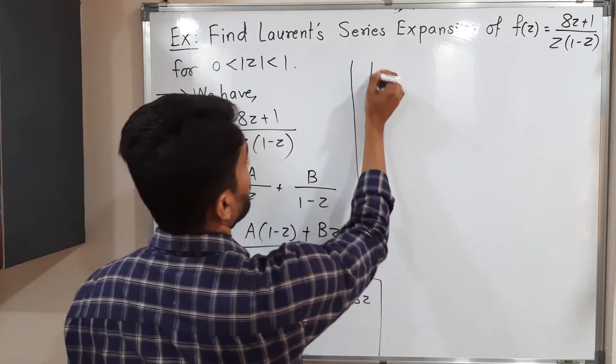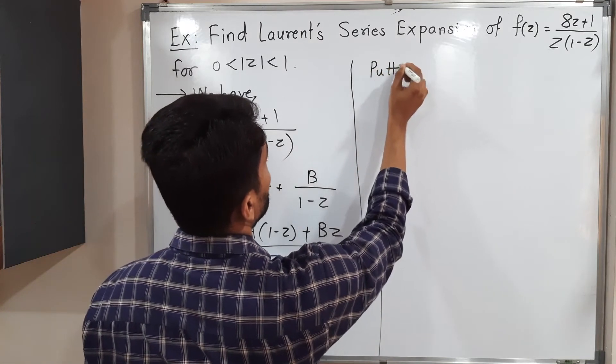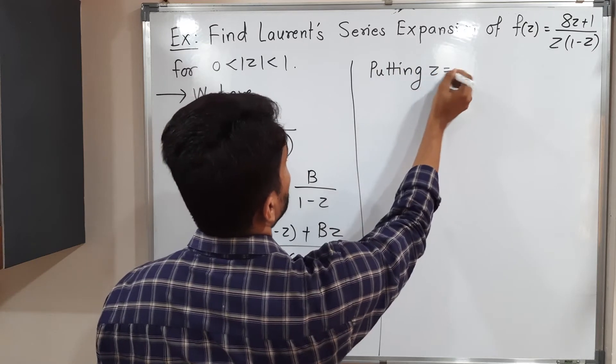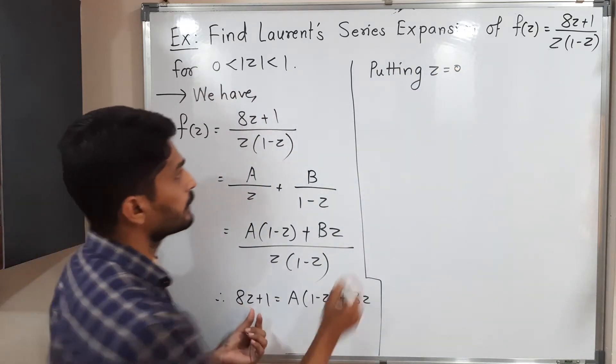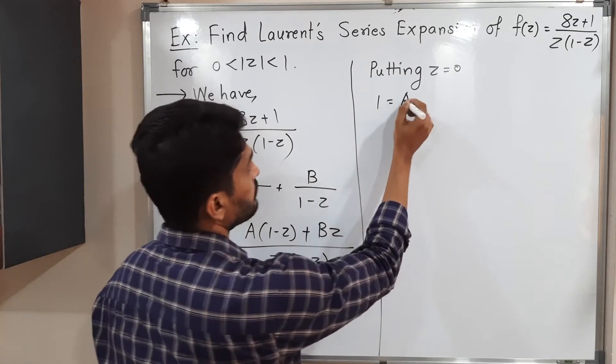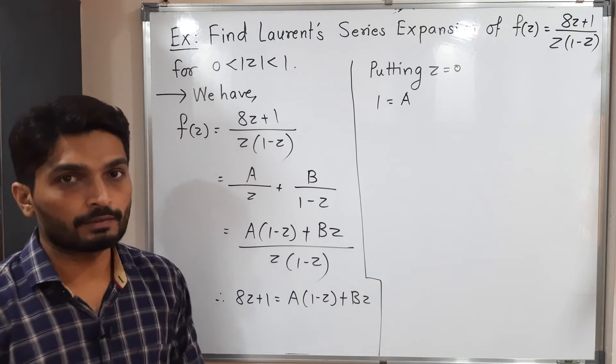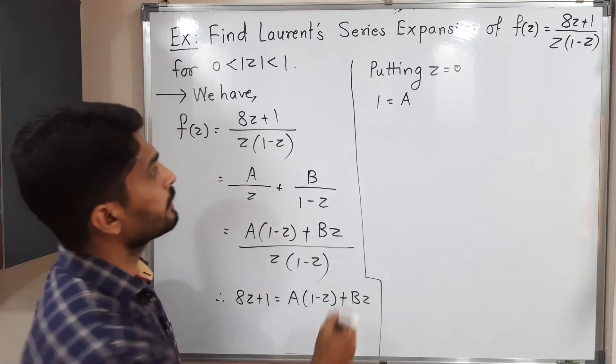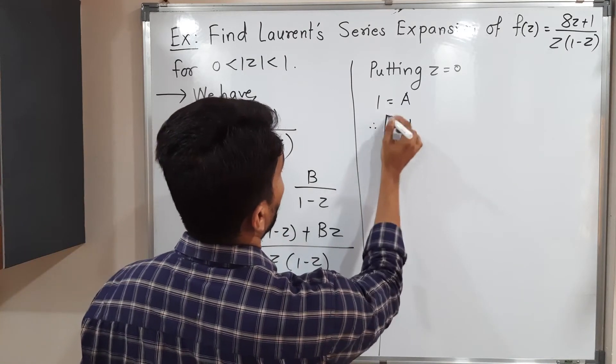Let us put z equal to 0. Putting z equal to 0, what will happen? Here you will have 1. If I put z equal to 0 you will have A. B into 0 you will have 0. So that is why A is equal to 1. We have got A is equal to 1.